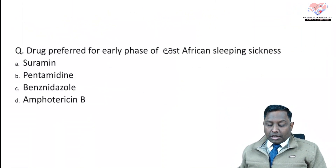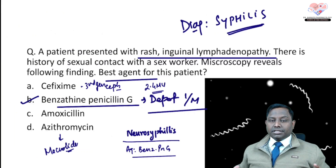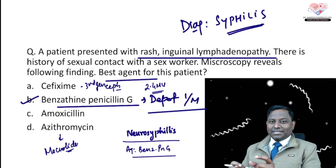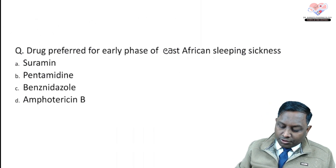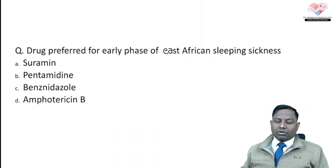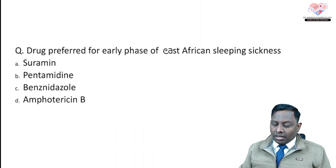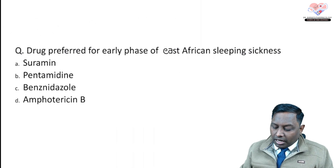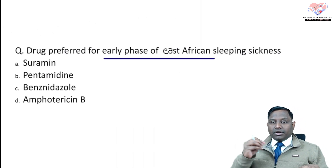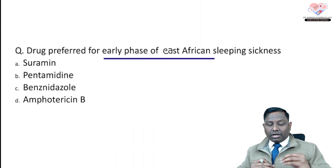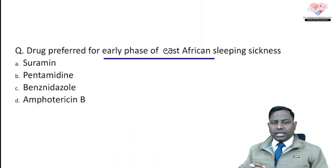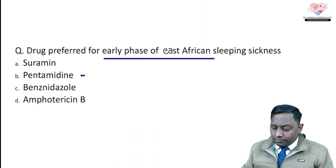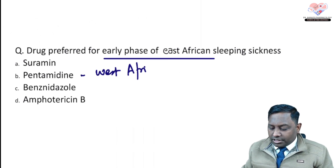The next question asks for the drug preferred in the early phase of East African sleeping sickness. As covered in a previous episode, the mnemonic is: West Africans are the 'best Africans' — they copy western culture and live in a penthouse — so pentamidine is used for West African sleeping sickness. For East African sleeping sickness, the drug is different.